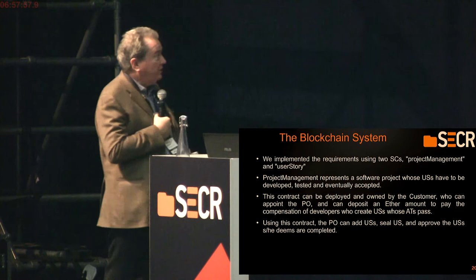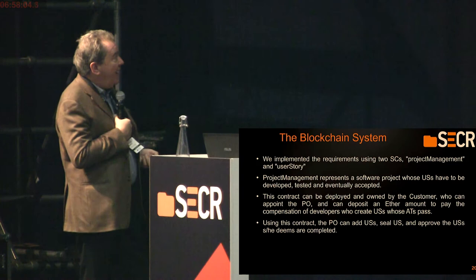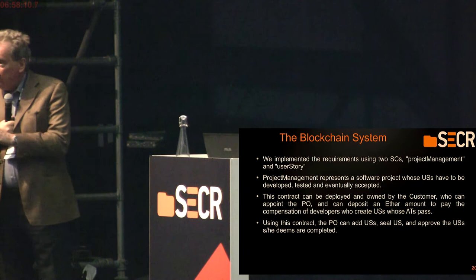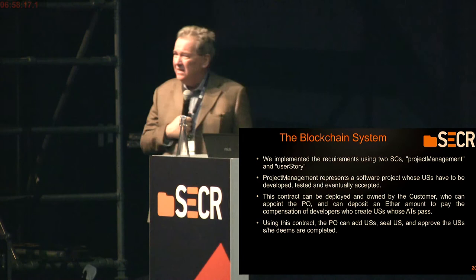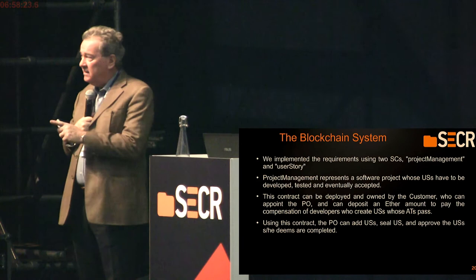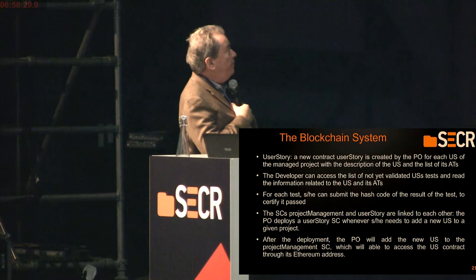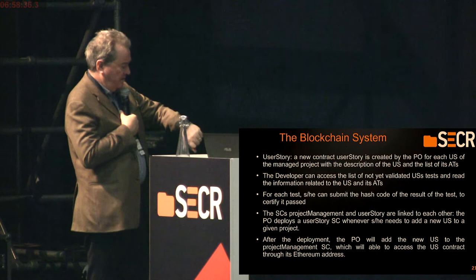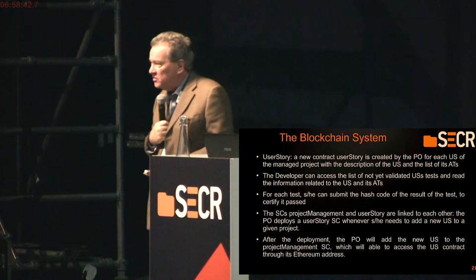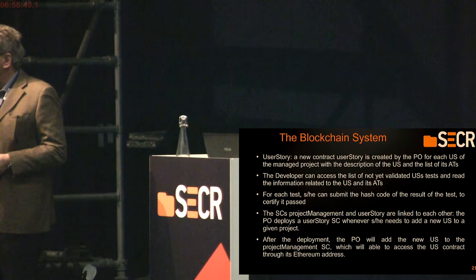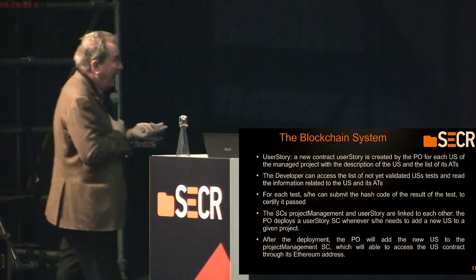We implemented the requirements with two smart contracts: one is Project Management, which owns the system, and the other is User Story — the Project Management represents a software project and each User Story is a different contract which manages its acceptance tests. The customer creates the Project Management contract, and the product owner creates the User Story contracts and adds them to the Project Management. A process follows which is quite straightforward at this point, and other parameters are set.